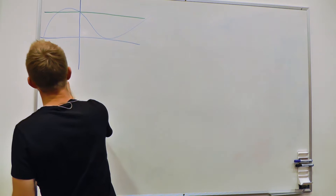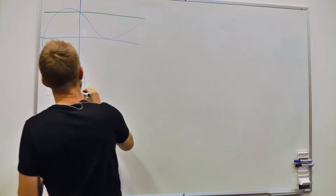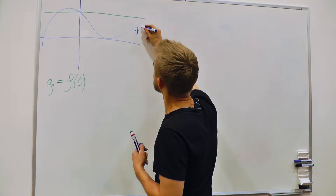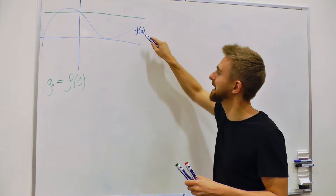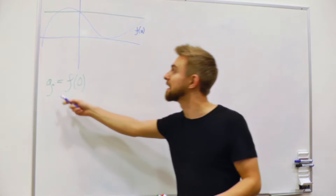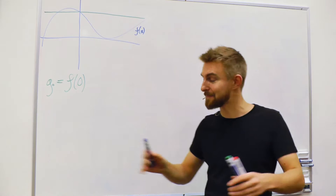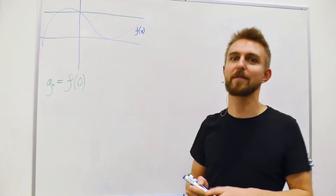We can write it up as: g equals f(0). The blue curve we don't know, but it's f(x). If we evaluate f at x equals 0, that's just a number — f(0) is just a number, like 3. So g is just a constant; it's not even a function of x. It has the same value everywhere. But we can do better.